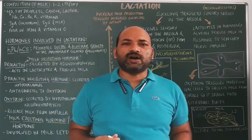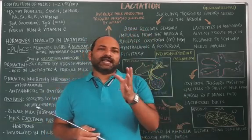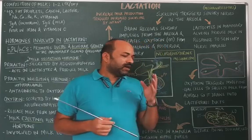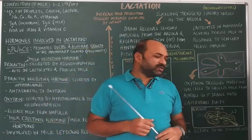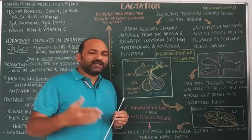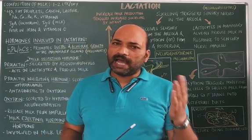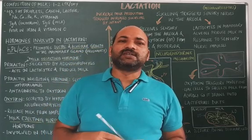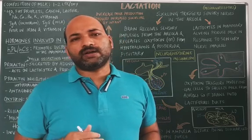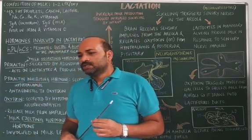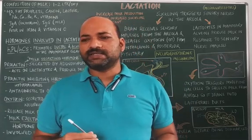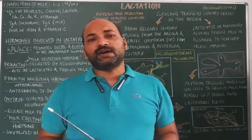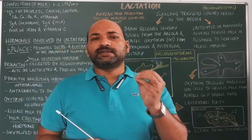These mammary alveoli bear cells which are called lactocytes. Lactocytes are the cells responsible for the formation of milk. Once they produce the milk, it enters into the mammary tubules from the mammary alveoli, then to mammary ducts, and from there the milk is temporarily stored in the mammary ampulla, also called the lactiferous sinus. Passing out from the lactiferous sinus, the milk is released through the nipple.